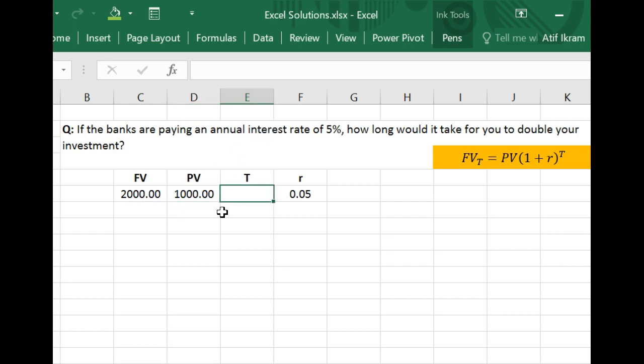Now the question that is being asked is, how long would it take for this to materialize? And so if you notice, in the context of this equation, three inputs are given to you: the future value, the present value, and R. And what you're being asked for is T.